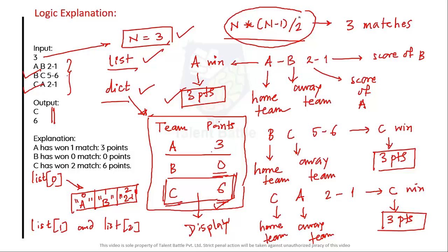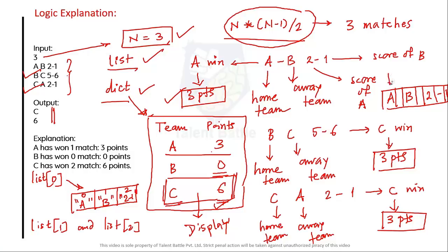Initialize all teams to zero initially, then perform calculations with if-elif-else conditions. Maintain a for loop ranging up to N*(N-1)/2 to cover all inputs. Take variable P as the current element sliced up to minus-one, split by the dash symbol. If integer value at P[0] is greater than P[1], the home team wins and gets three points.